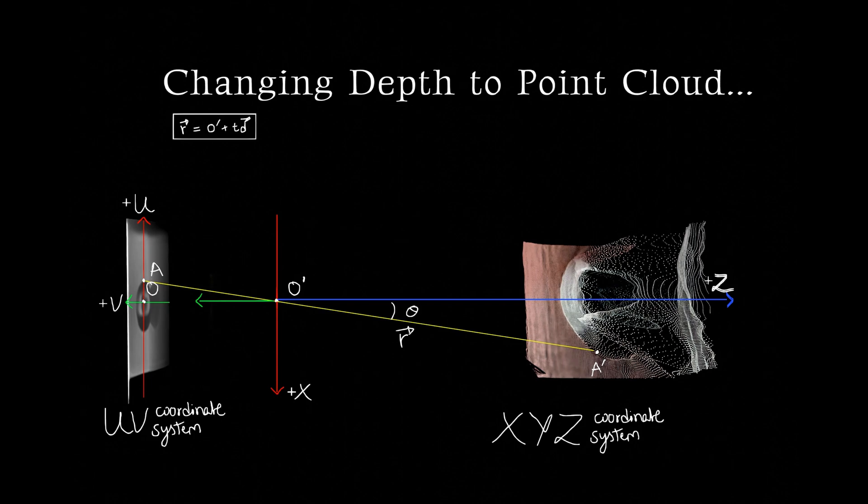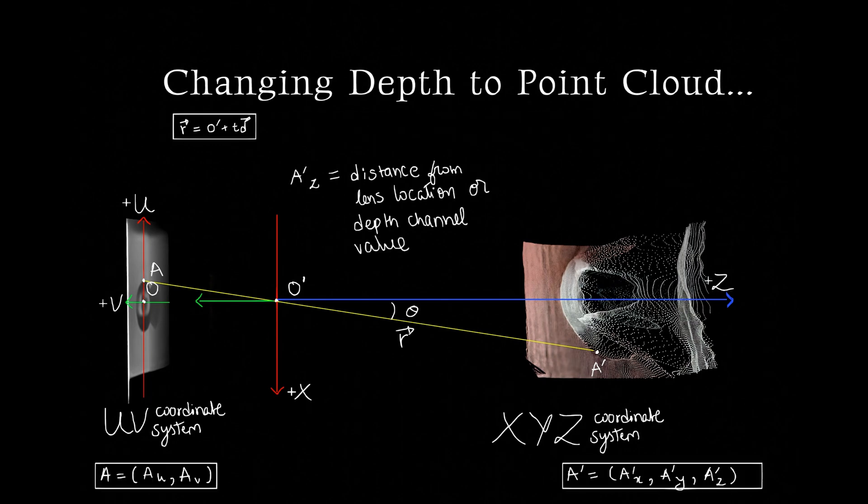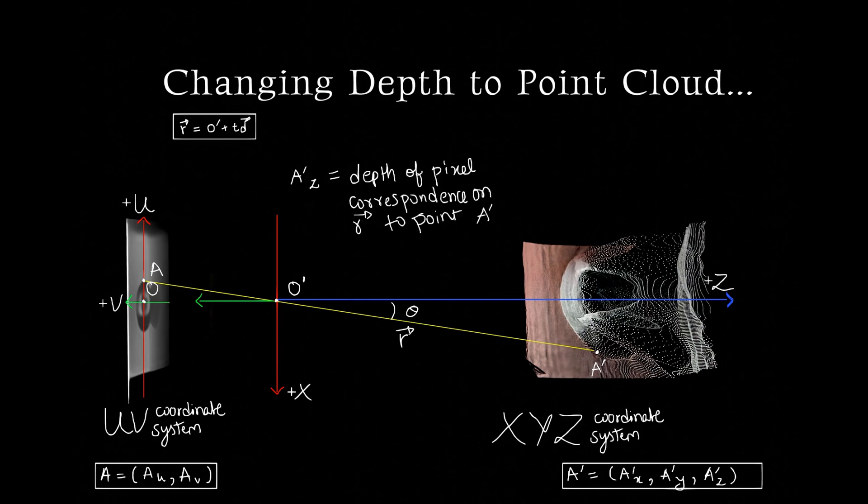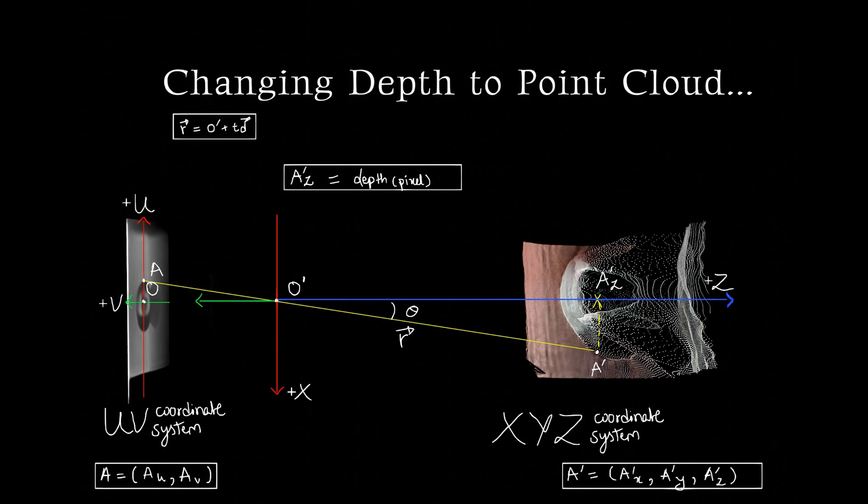The Z coordinate value of a point in the point cloud is the distance of the point from the sensing device, or the depth value from the depth image of the corresponding pixel.